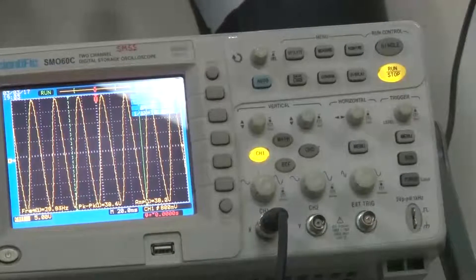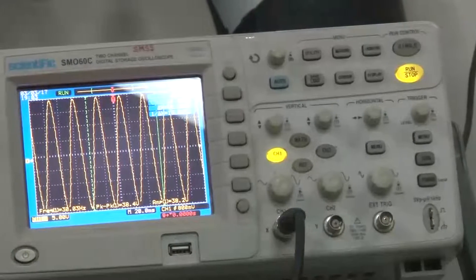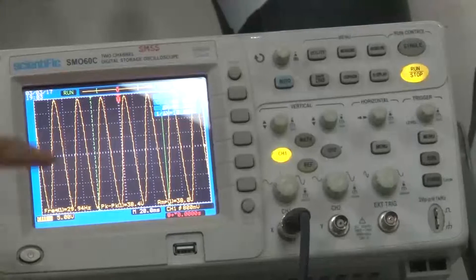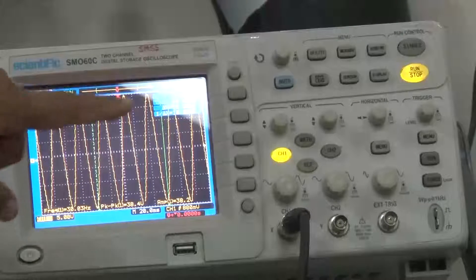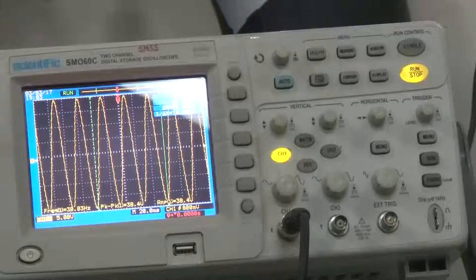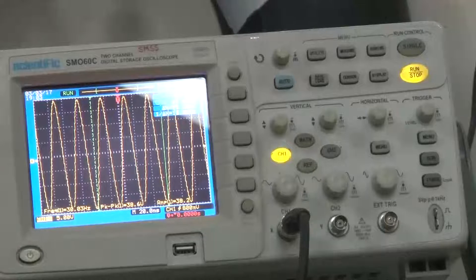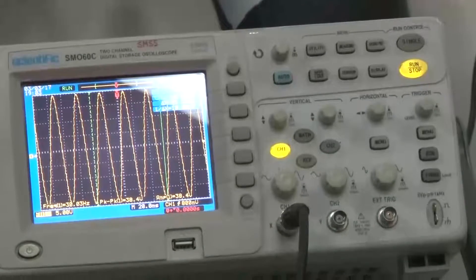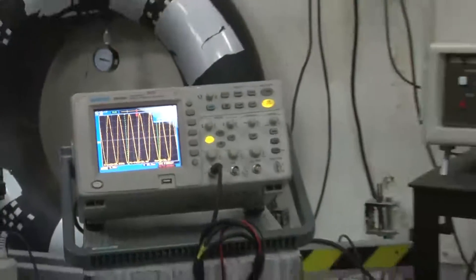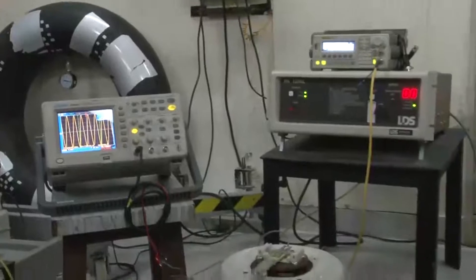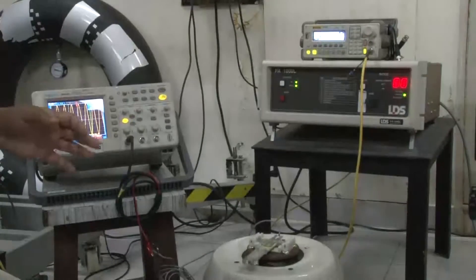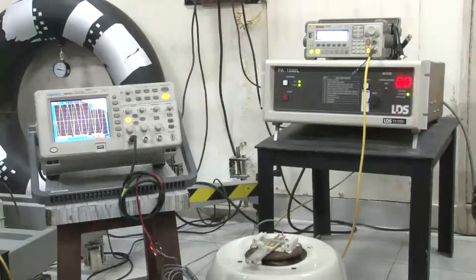So we have increased the peak to peak voltage from 6 volts to more than 6 times, to 38.4 volts, just by doubling the frequency. Which means also that the higher the frequency, the more will be the mechanical energy and we will be able to convert more of this mechanical energy to electrical energy.